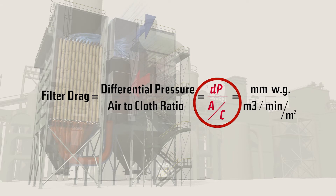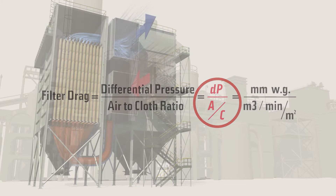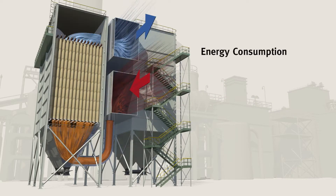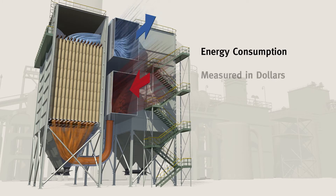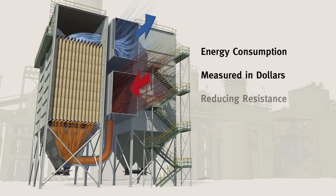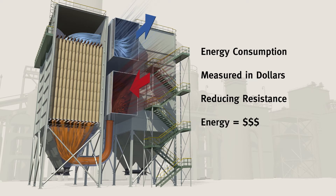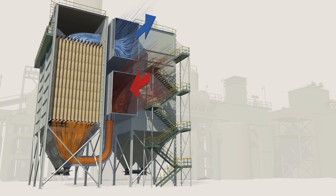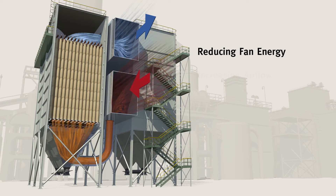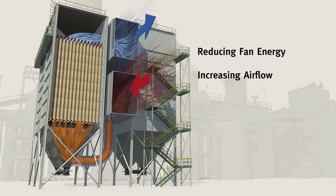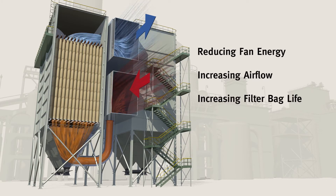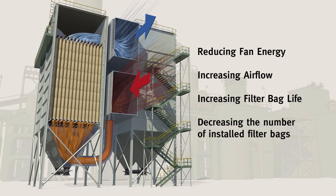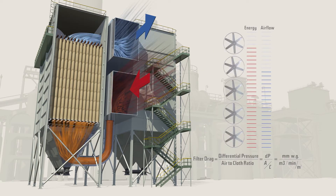Simply put, it is the amount of force or energy it takes to move air through the bag house. Energy consumption is ultimately measured in dollars, so reducing resistance and saving energy will save money. Using new Gore Low Drag filter bags can help you improve performance in one of four ways: reducing fan energy, increasing airflow, increasing filter bag length, or decreasing the number of installed filter bags.